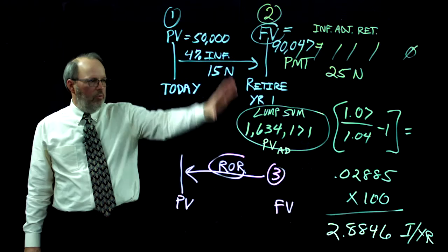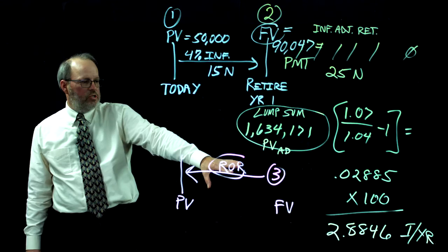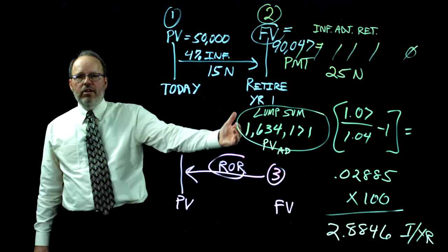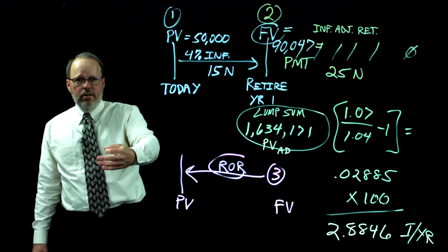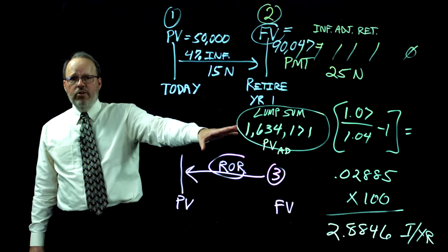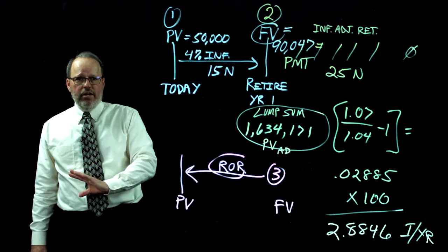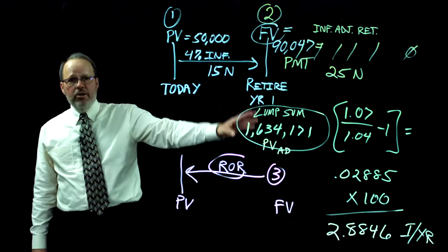If you enter the inflation-adjusted return directly by calculating it and entering 2.8846, this is the number you'll get. If you enter 2.8846 without doing the full calculation first, your answer will be off by just a few dollars — rounding differences are normal when dealing with long periods of time. And that's step two.